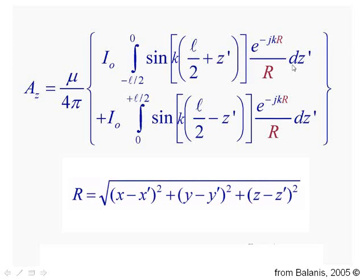And I'm integrating that current now along the length of the wire. Now, it just so happens because I have a wire that has two pieces, there's an integral from 0 to l over 2 and an integral from 0 to minus l over 2, in other words, the two halves of the dipole. This is basically the expression that I need to solve in order to find A sub z and therefore, in order to find the radiated electric field and magnetic field.